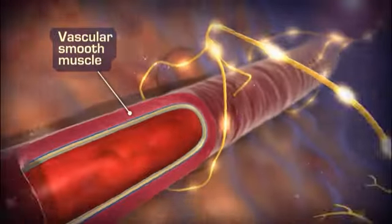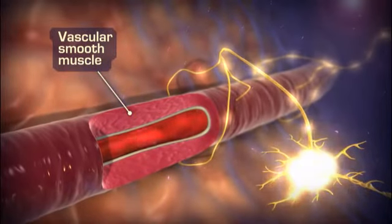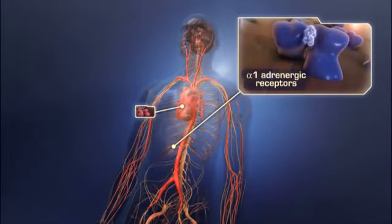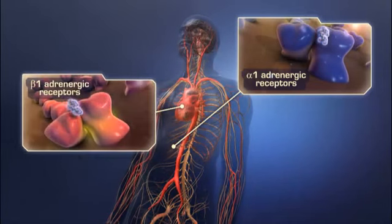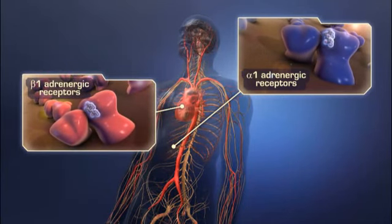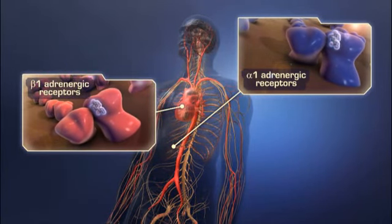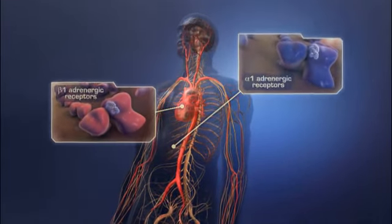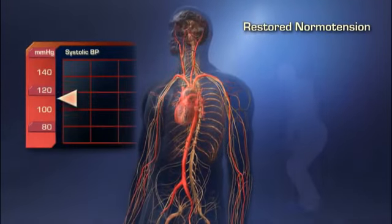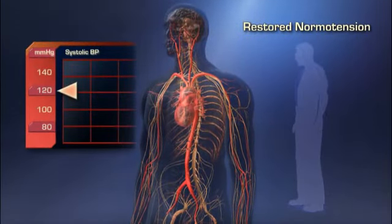Norepinephrine stimulates alpha-1 adrenergic receptors in vascular smooth muscle, causing vasoconstriction. Norepinephrine also stimulates cardiac beta-1 adrenergic receptors, increasing contractility and heart rate. This action results in restoring normal tension within seconds of a person standing.